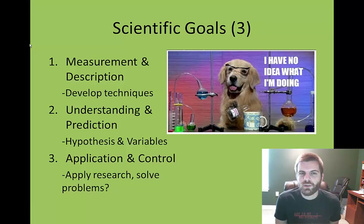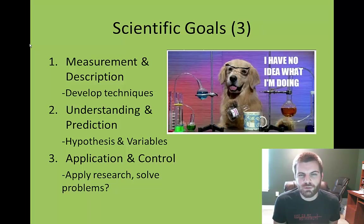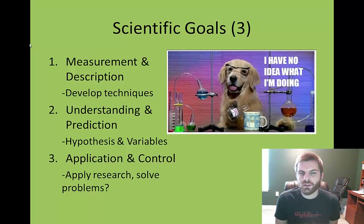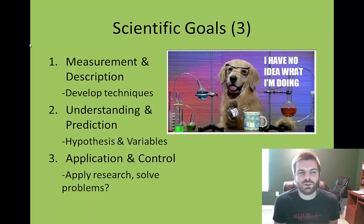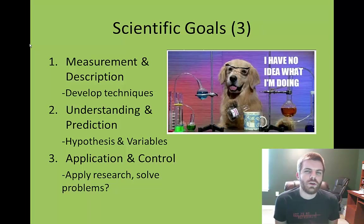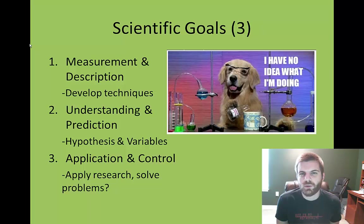There are three scientific goals within using the experimental research method. As you can see here, there are measurement and description, understanding and prediction, and then application and control. Each one of these goals serves a purpose to describe why someone would use the experimental research method and what exactly the benefit of that would be.